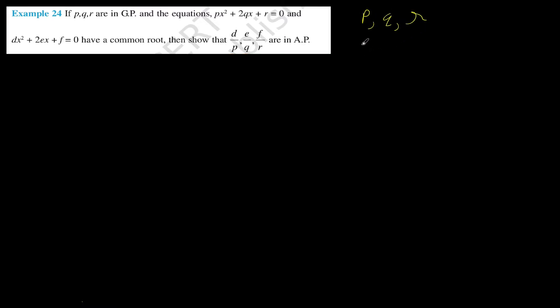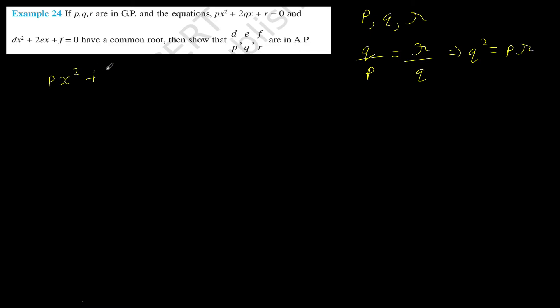Let us solve the next question. It says P, Q, R are in GP, so Q squared equals PR. It also says that two equations have a common root, and we need to show certain ratios are in AP. The first equation is PX squared plus 2QX plus R equals 0.